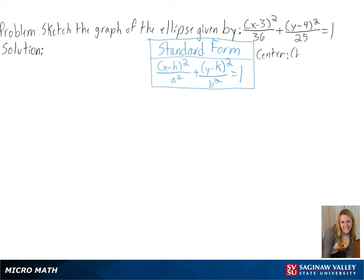We first need to find the center of the ellipse. We can see here that h is equal to 3 and k is equal to 4, so the center of our ellipse will be (3,4).